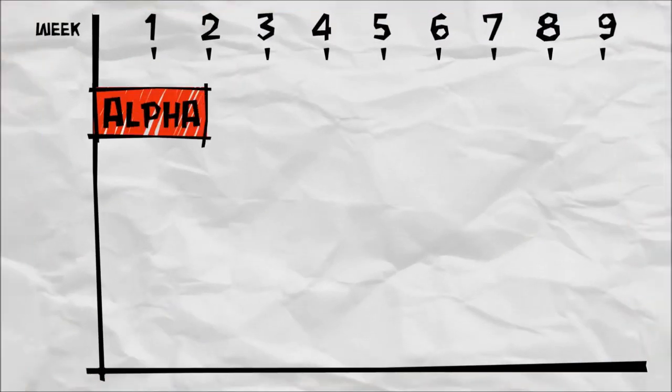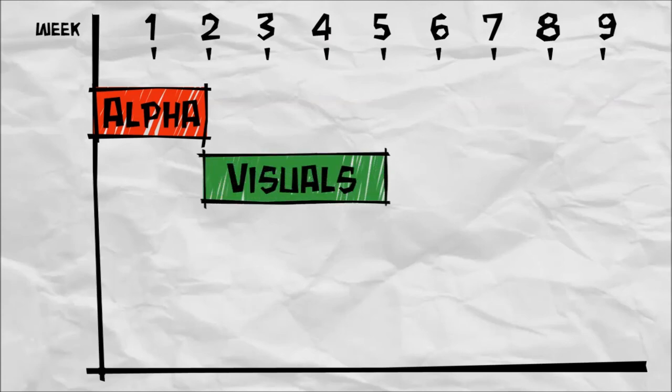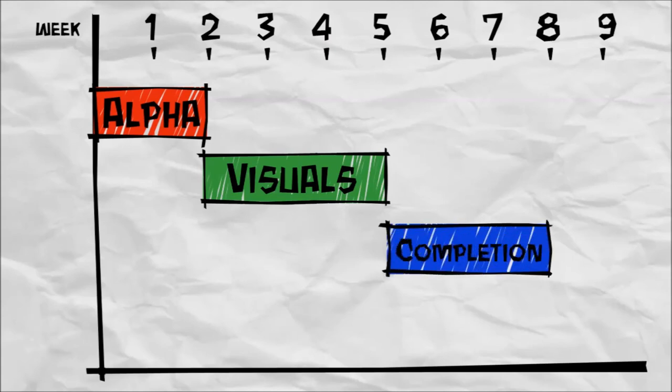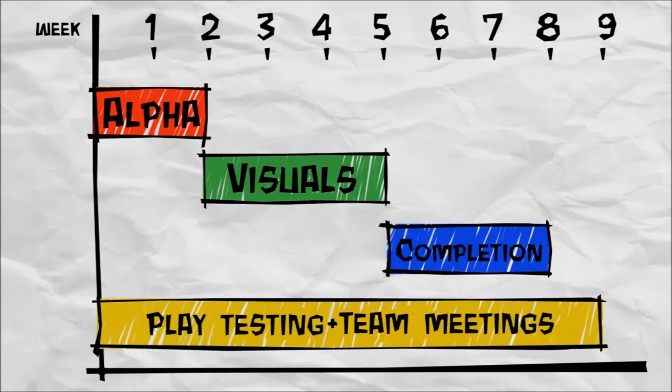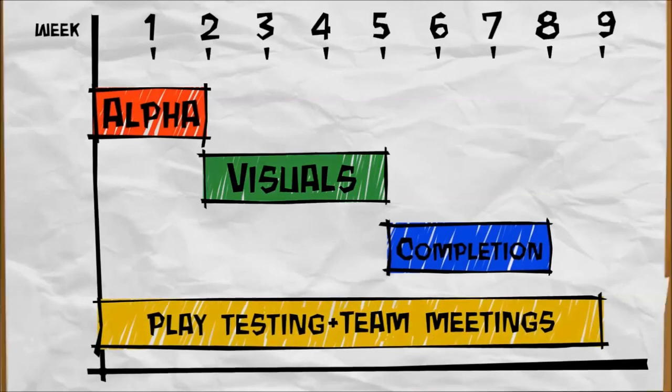There will be a working alpha of the game up and running by the end of the second week. All the visuals will be in the game by the end of the fifth week. By the end of the eighth week at the latest, the game will be made and ready for the protoplay event itself. During the nine weeks, we will constantly be having meetings and be playtesting our game.